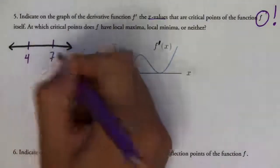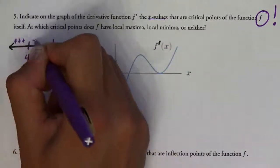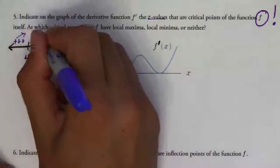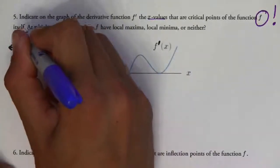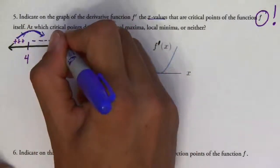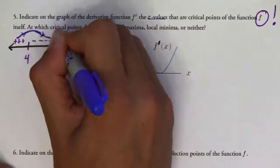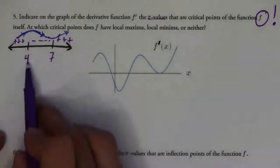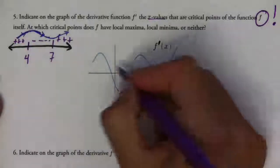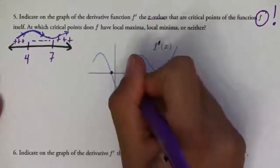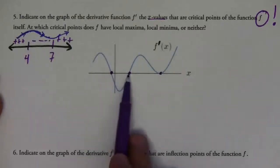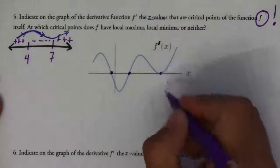You get that the derivative is positive, then negative, then positive. Since it's increasing and then decreasing, as long as it's continuous, there's going to be a maximum there. And then if it's decreasing and then increasing, there's going to be a minimum. The sign of the derivative is what tells you whether it's a maximum or minimum. Remember, critical points are where the first derivative equals zero. Since this is a graph of the first derivative, this spot, this spot, and this spot are critical points — because at all of these spots, the first derivative equals zero.